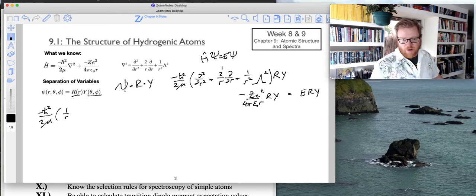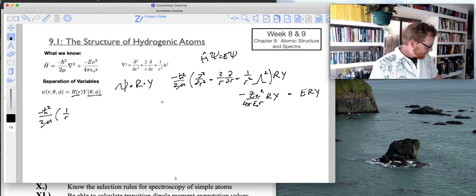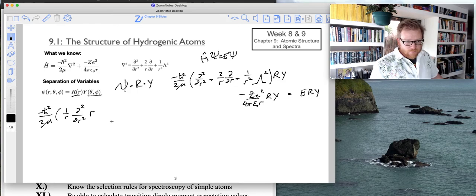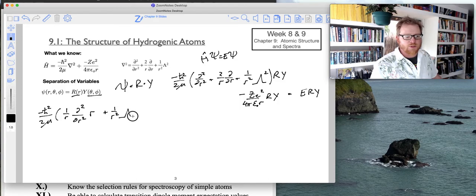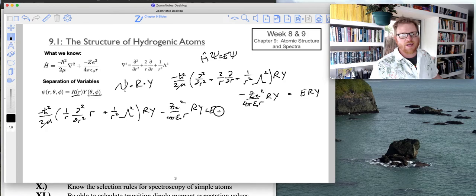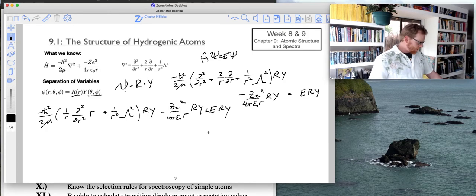And that approximation of these two terms right here, the second derivative of r and 2 over r times ddr, that can be approximated as 1 over r times second derivative in r squared times r. I'm not going to hold you responsible for where that approximation comes from. We'll just take it, we're going to use it and be happy that we have one less term to deal with.